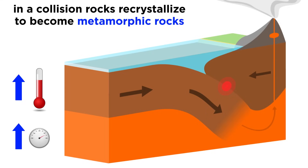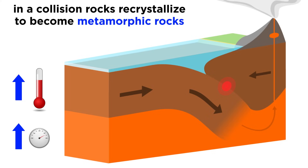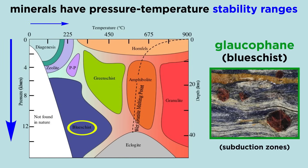The immense pressures and temperatures created by the collision of two plates also cause the rocks to recrystallize and become metamorphic rocks. Different minerals have different pressure-temperature stability ranges and can therefore be used to estimate the pressure and temperature conditions during metamorphism. When the pressures are very high with respect to temperature, as in subduction zones, the blue mineral glaucophane forms. These rocks are called blue schist.